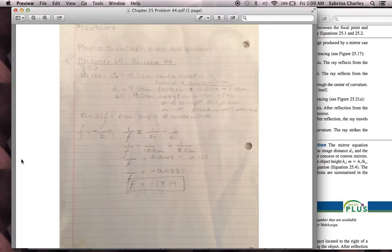We're looking for the focal length of the convex mirror, so we can just simply use that formula. But since this is negative, we're going to subtract. So, 1 over the focal length equals 1 over the object distance, which is 15 centimeters,